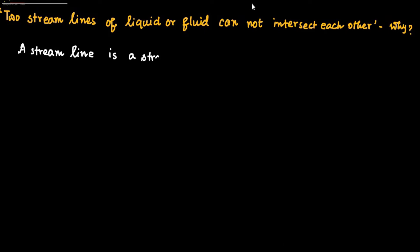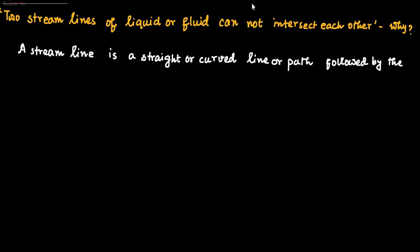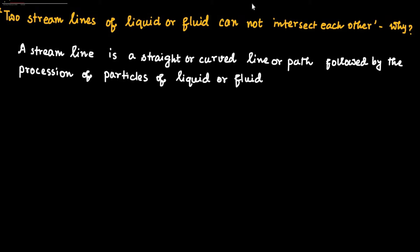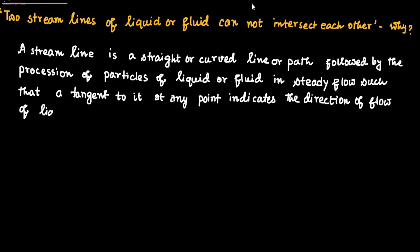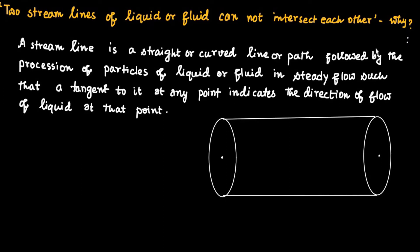A streamline is a straight or curved line or path followed by the cross section of particles of liquid or fluid in steady flow, such that a tangent to it at any point indicates the direction of flow of liquid at that point.